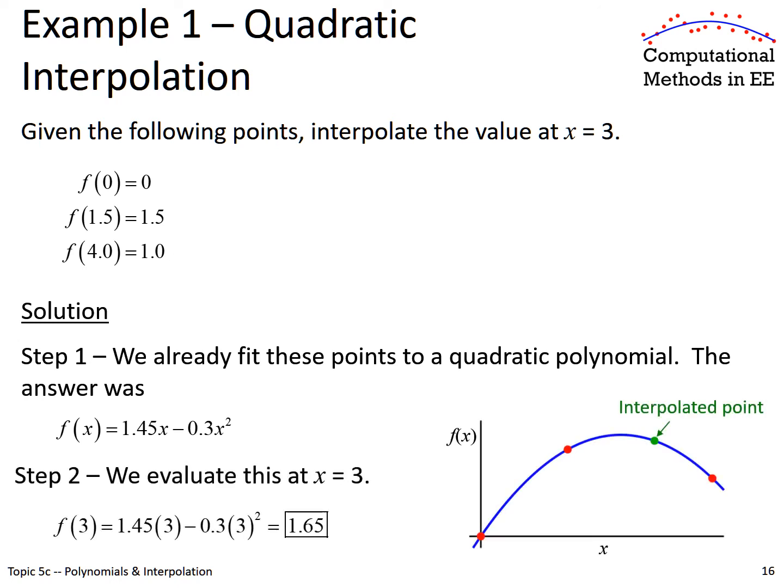Once we have that, it is trivial to figure out what's happening at x equals 3. We just plug in a value of 3 for x and do our math, and we get a value of 1.65. And if we were to plot this, we have in red our three measured points, and then at x equals 3, we have our interpolated point. And what we can see is that it also falls exactly on the line. That's an interpolation.